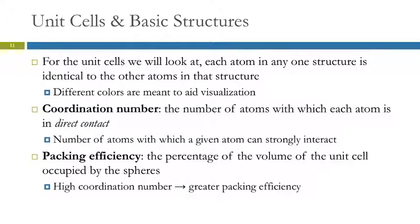We're going to look at unit cells with pictures that have different colored balls, but those all represent the same kind of atom — we're just using different colors to help us visualize. We talk about coordination number and packing efficiency. The coordination number is how many other atoms a given atom is in direct contact with, because those are the atoms it interacts strongly with. Packing efficiency is the percentage of the volume of the unit cell actually occupied by atoms, ions, or molecules as opposed to empty space. A high coordination number gives greater packing efficiency.